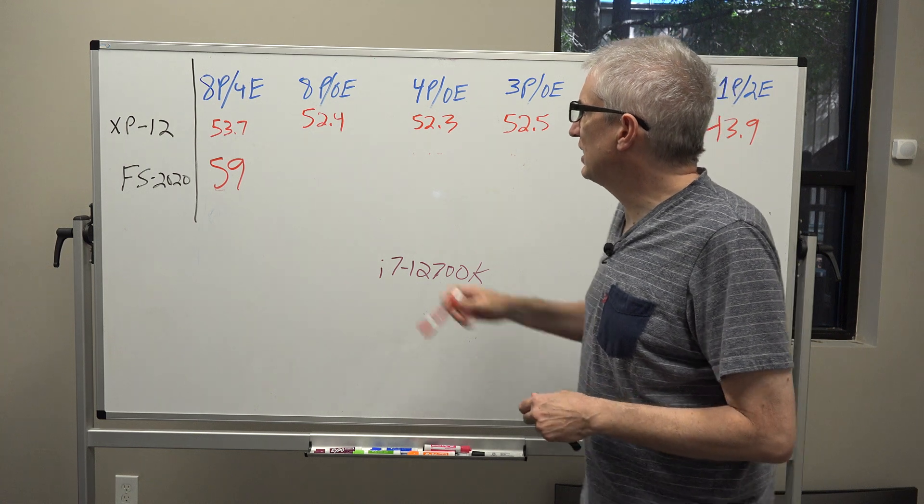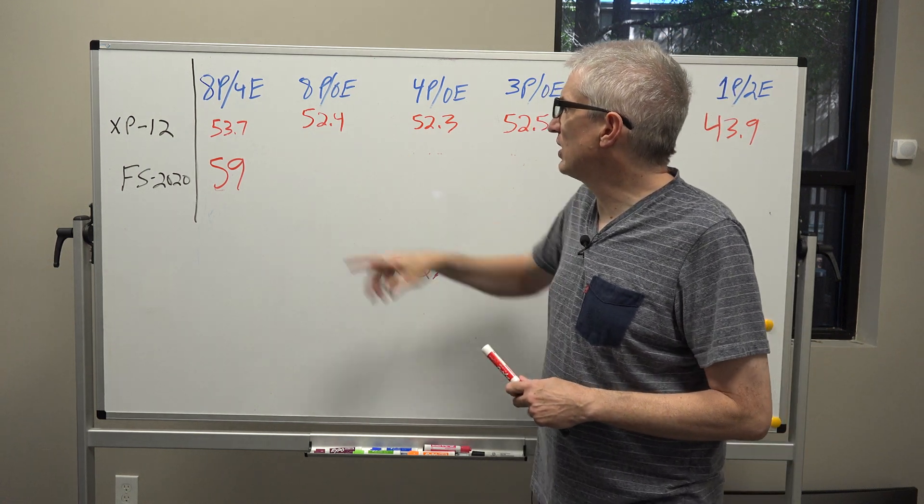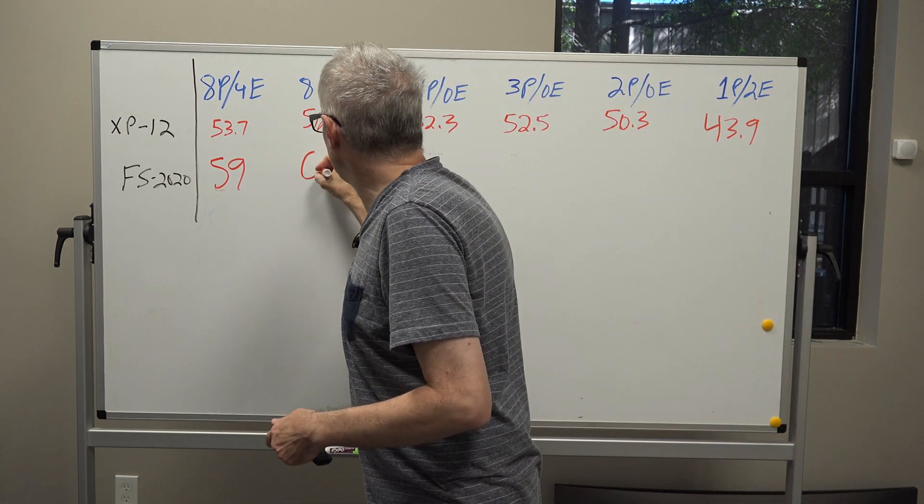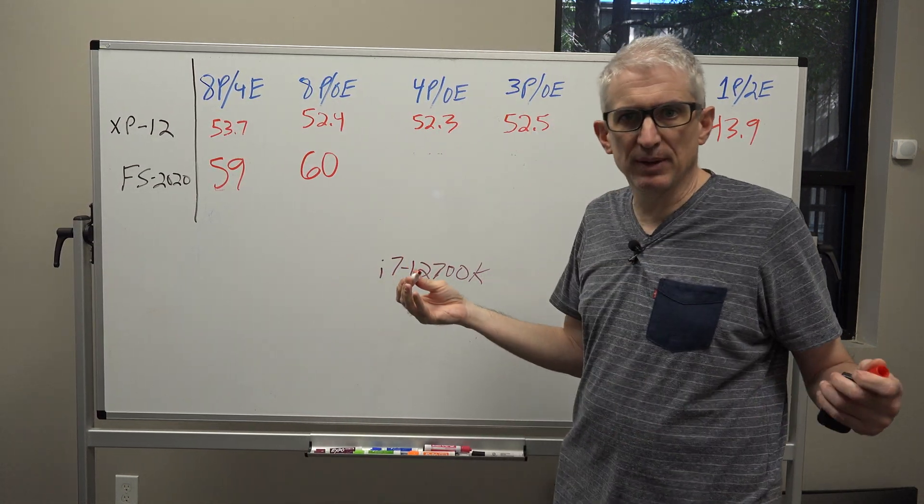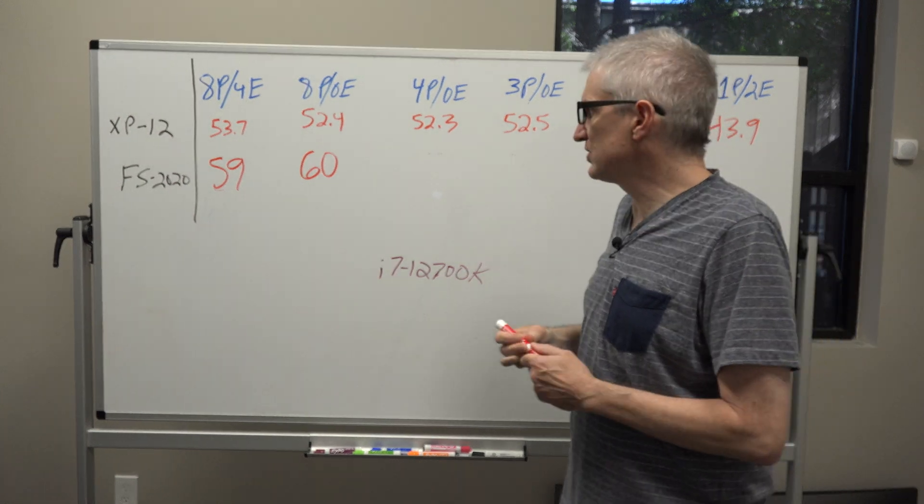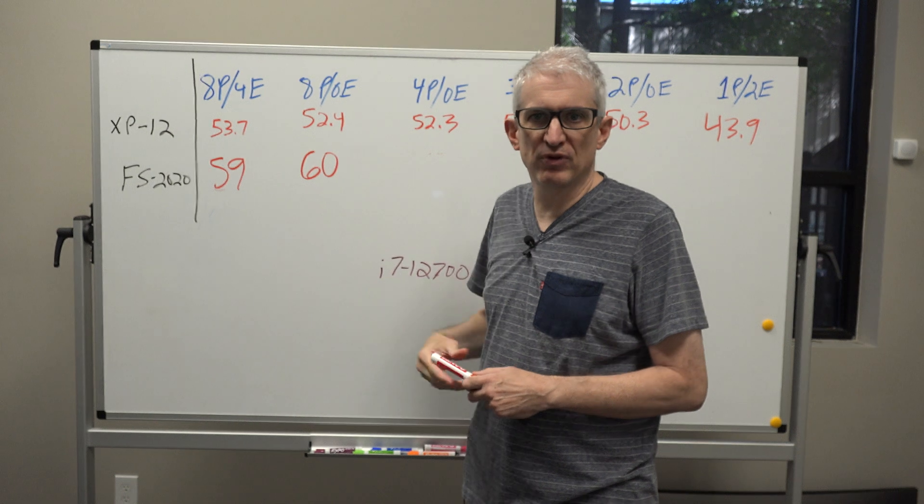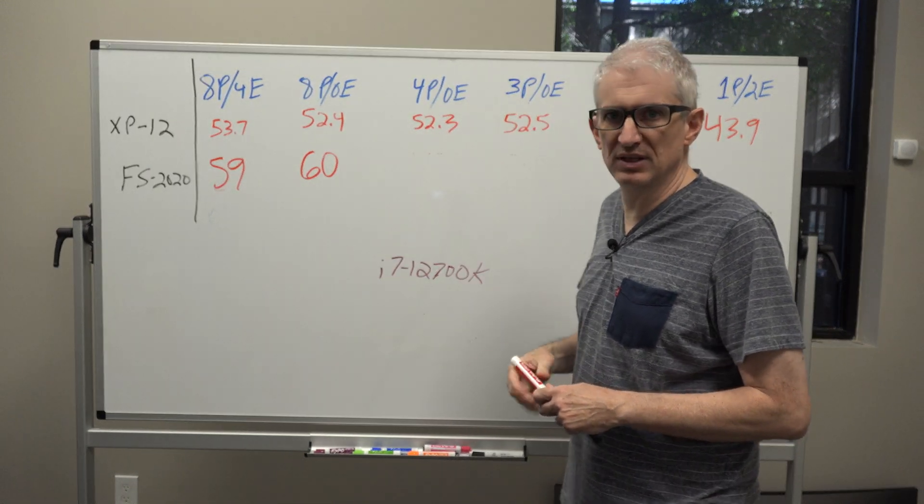So the next test I did, I just disabled the efficiency cores so we have eight performance cores running and I got 60, which is basically the same thing. This could just be a run-to-run variance. One frame per second is nothing to even think about.